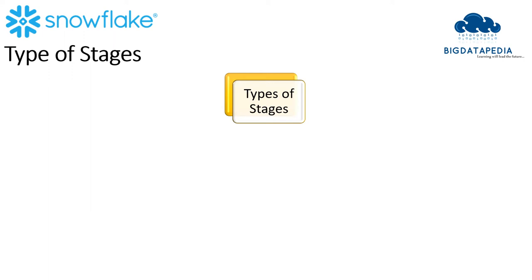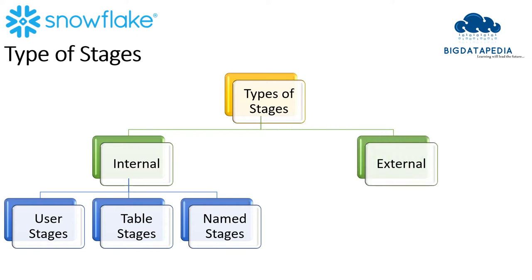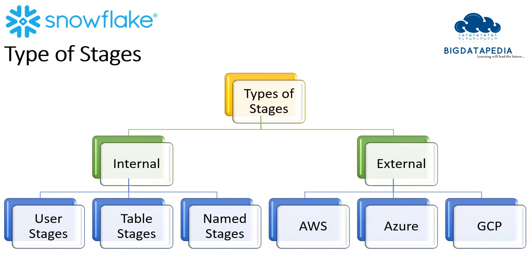Snowflake has two types of stages. First is internal. In internal, there are three categories available: user stages, table stages, and named stages. The other stage type is external. In external, everything will be in a cloud environment, so you can create your stages on top of AWS, Azure, and GCP. Let me show some examples and hands-on in this video.